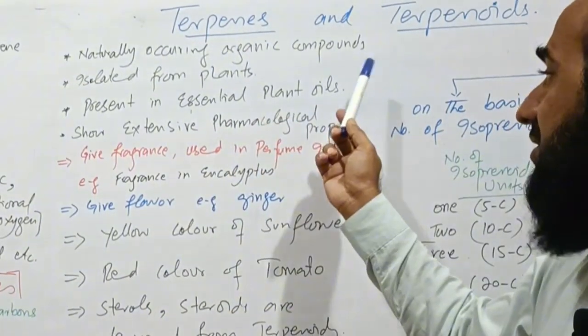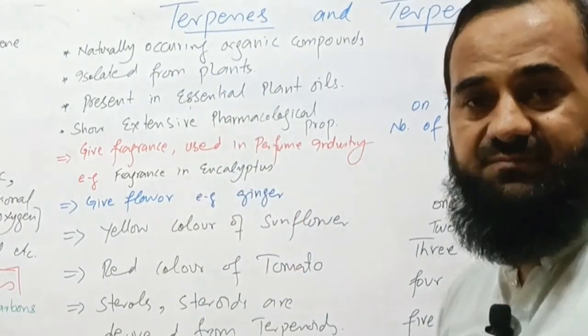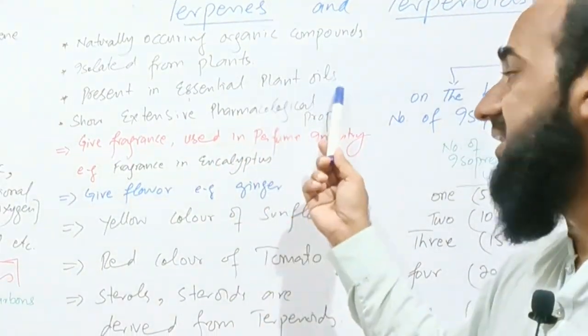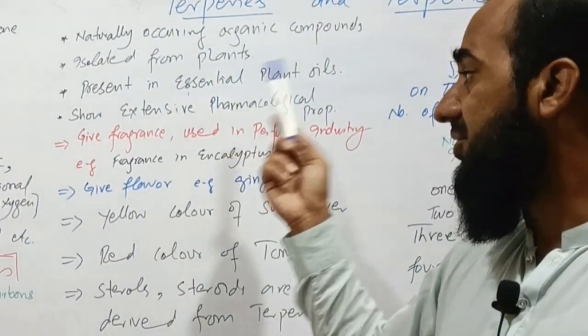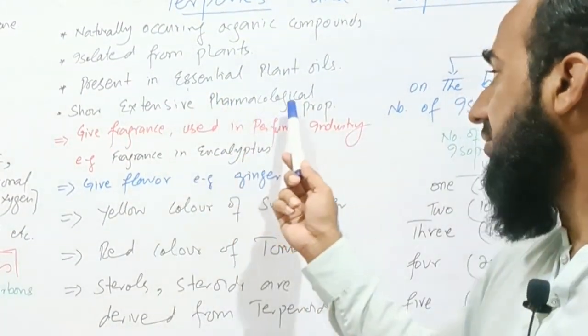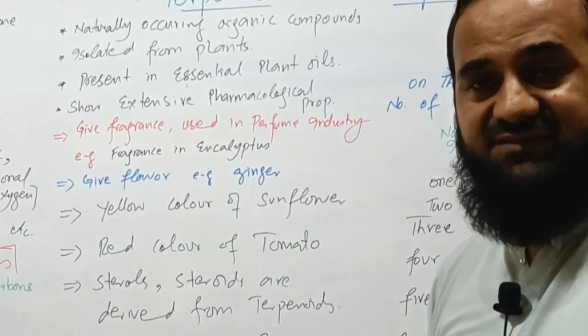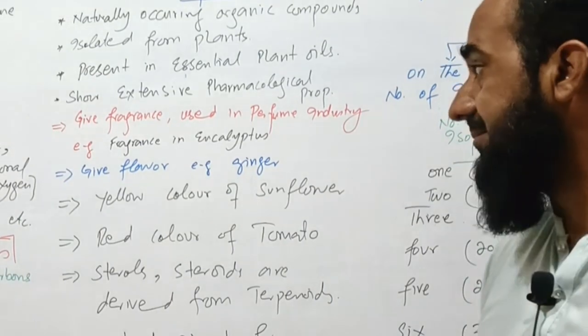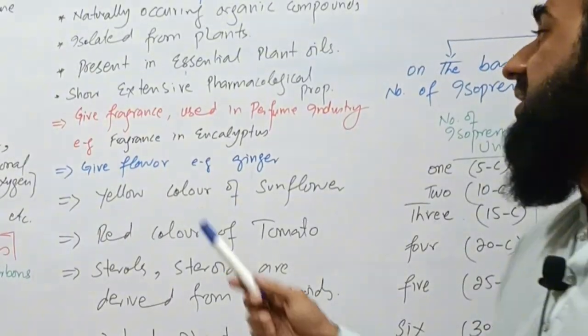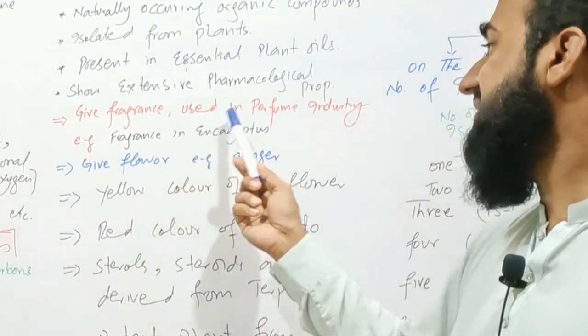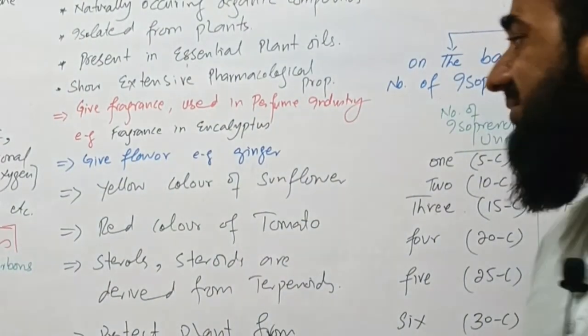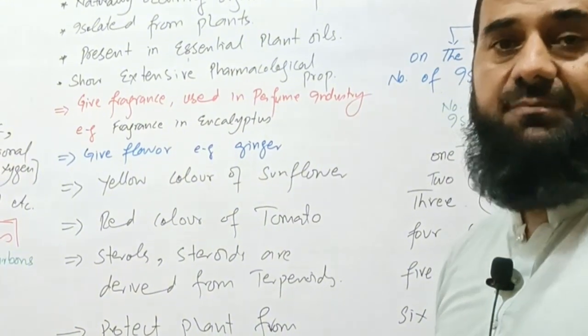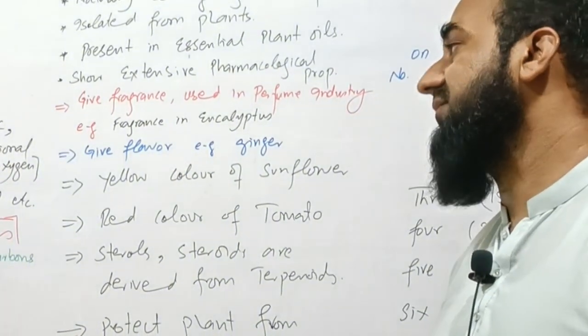These are naturally occurring organic compounds isolated from plants and are present in essential plant oils. Terpenes and terpenoids show extensive pharmacological properties as well as many medicinal applications, their herbal remedies. They give fragrance, hence these are used in perfume industry. For example, characteristic odor or fragrance in eucalyptus tree is due to the presence of terpenoids.